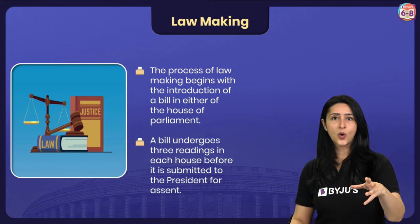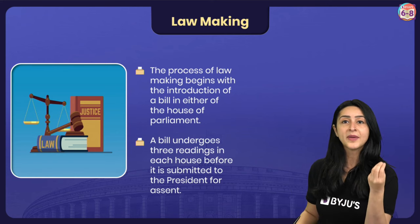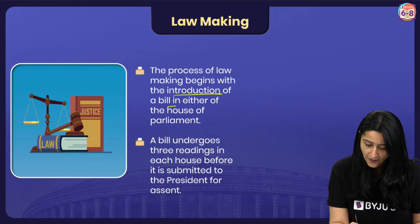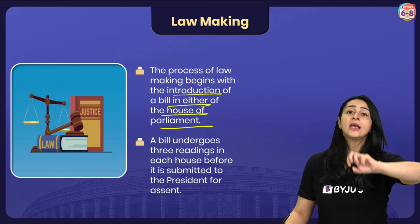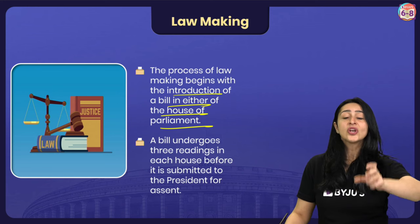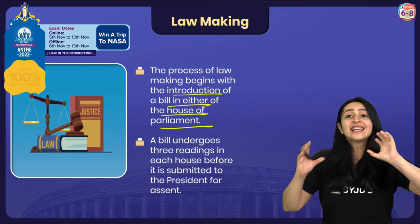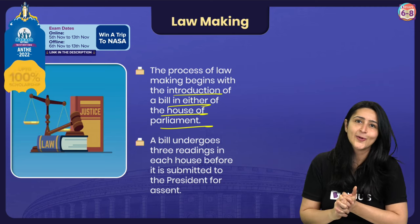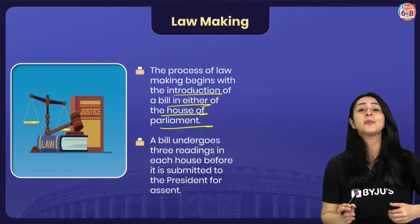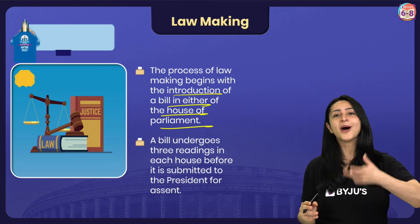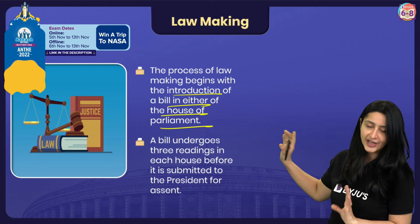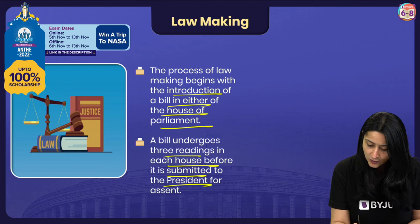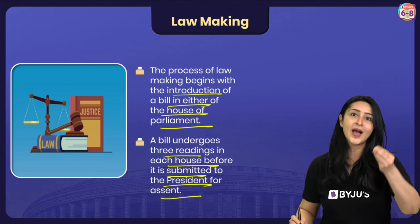Talking about the process of law making — it begins with the introduction of a bill in either of the houses of Parliament, either the Lok Sabha or the Rajya Sabha. A bill undergoes three readings in each house before it is submitted to the President for their assent. For now, you only need to know it can be initiated in either house, goes through three readings, and is then given to the President to pass.